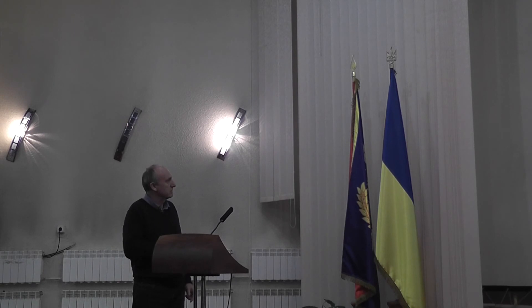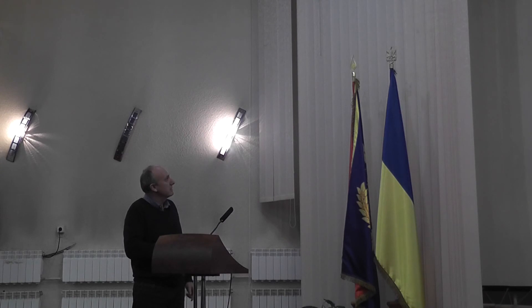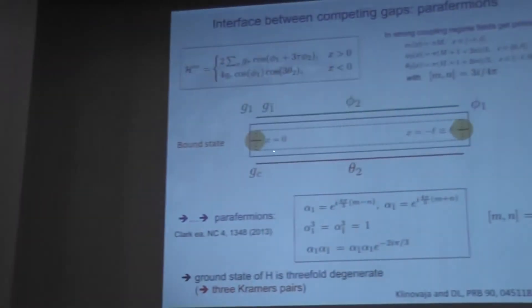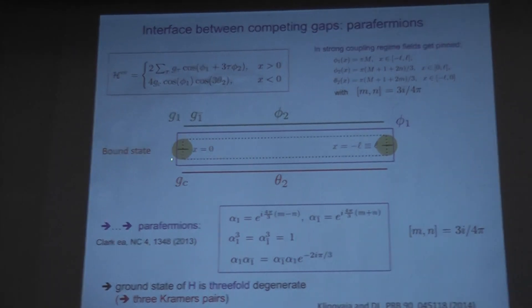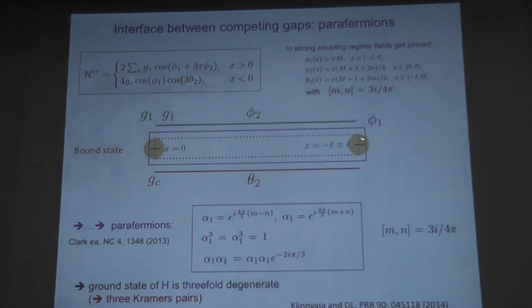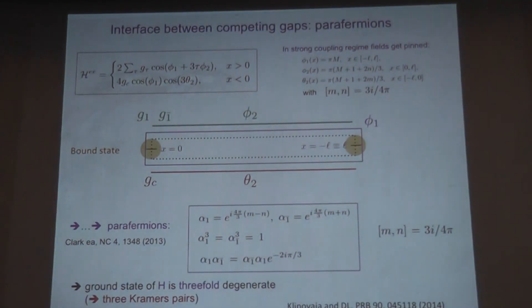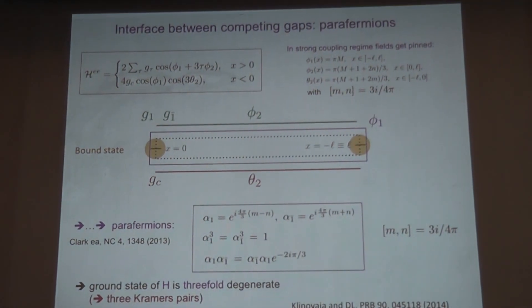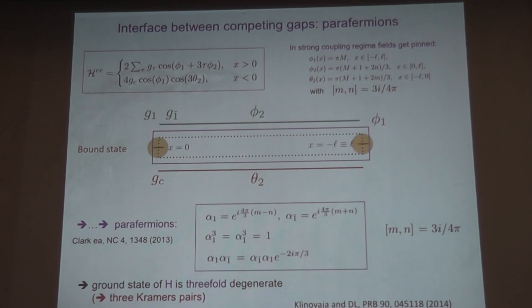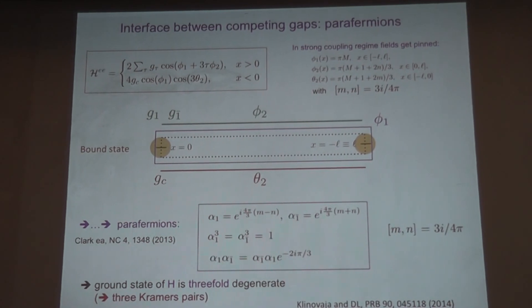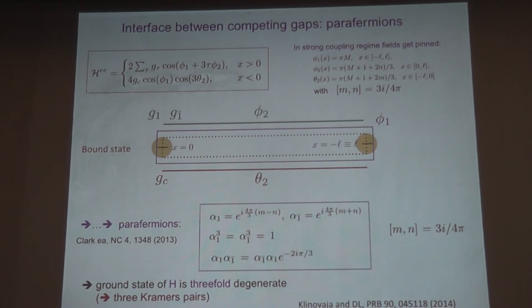You can map this and you will end up with localized modes on the left and the right side which satisfy the parafermion algebra. You can give a physical interpretation, and you can also extend this to topological insulators.